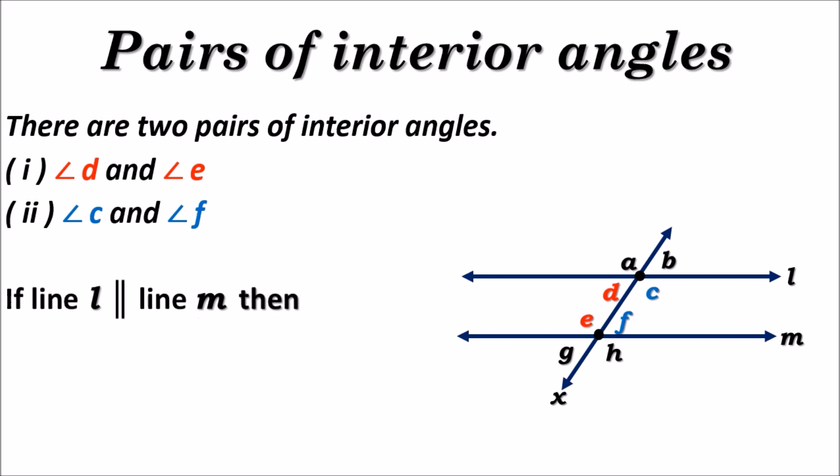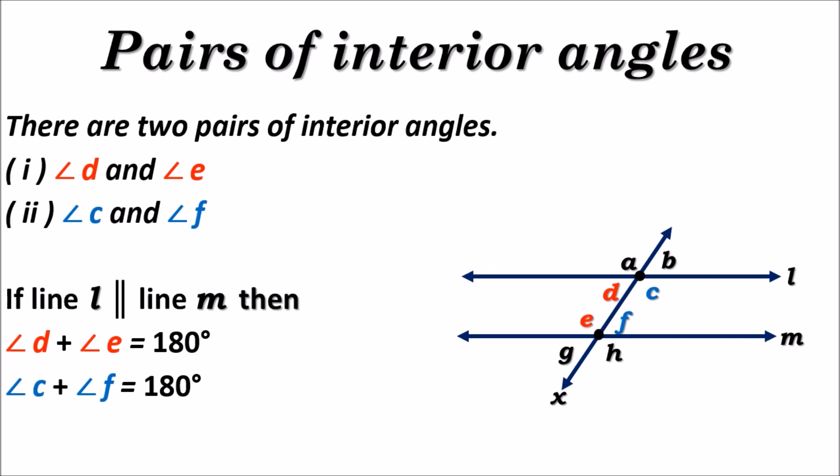If line L is parallel to line M, then angle D plus angle E equals 180 degrees, and angle C plus angle F equals 180 degrees. This means if any transversal intersects two parallel lines at different points, then the interior angles formed are supplementary — that is, the sum of those two interior angles is 180 degrees.